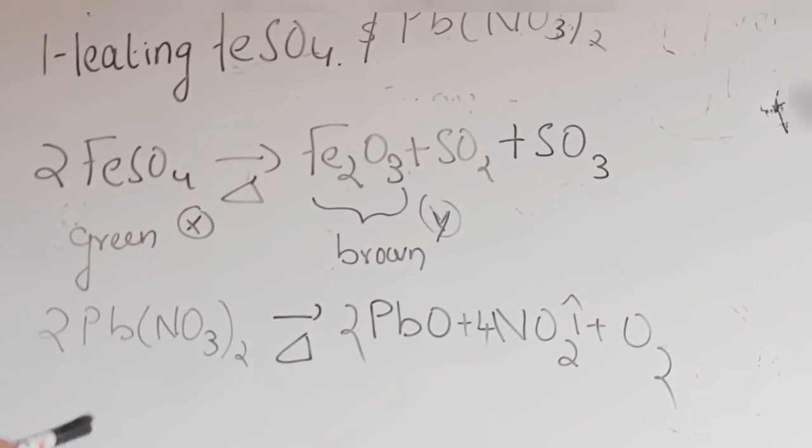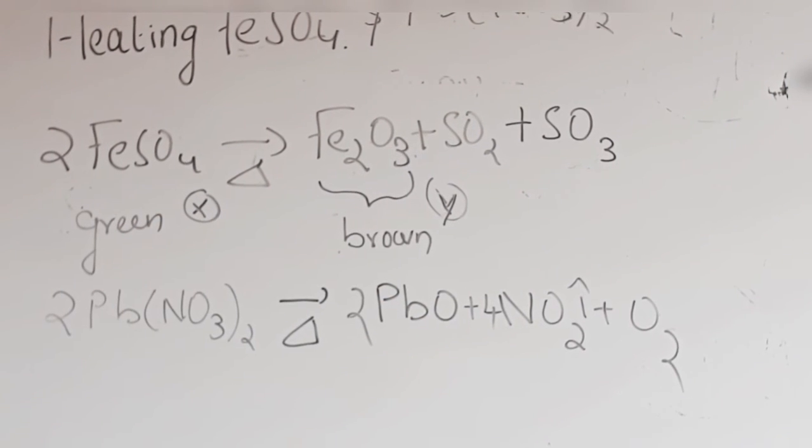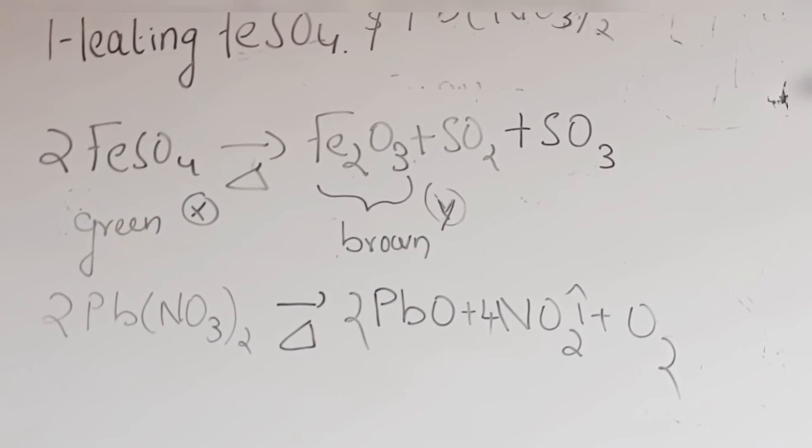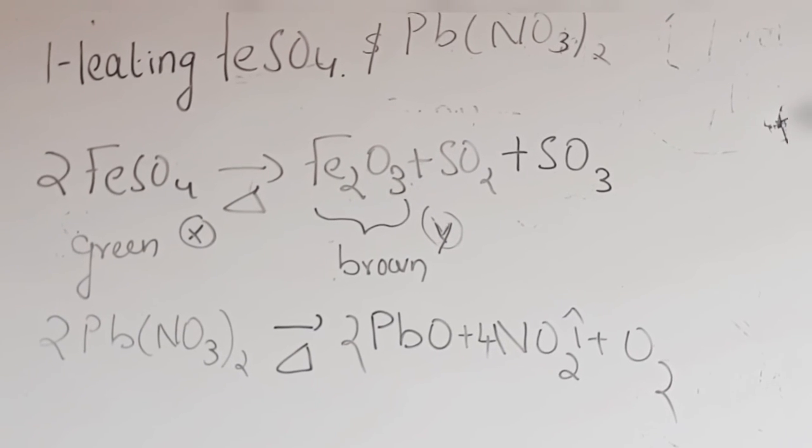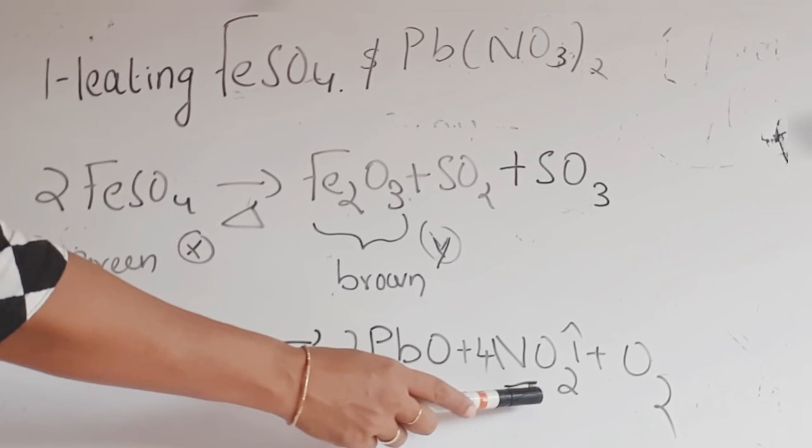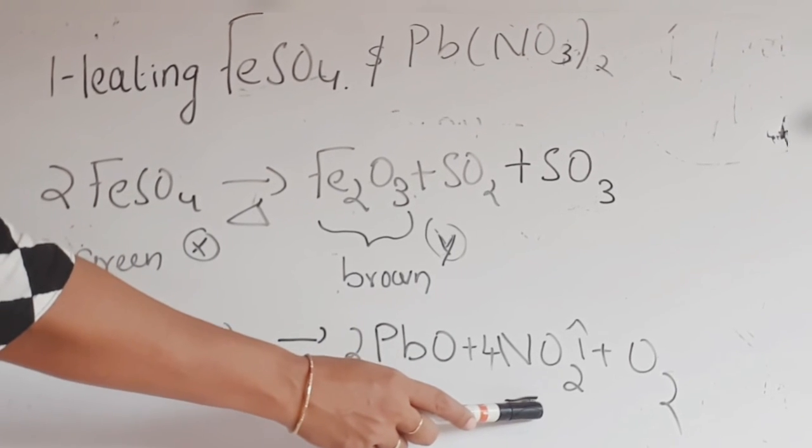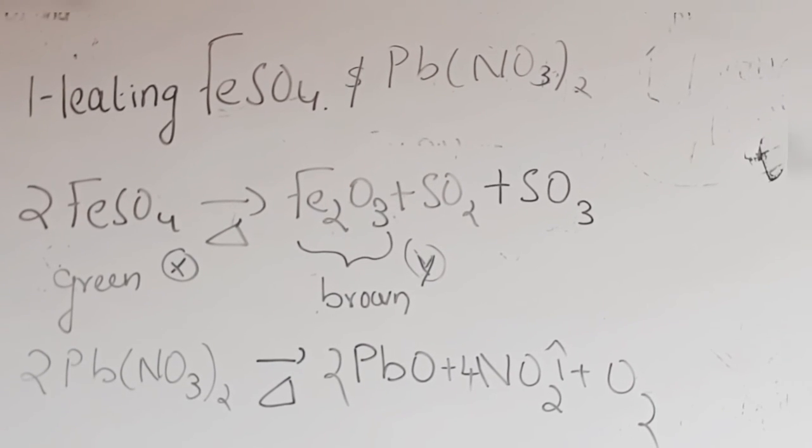When you heat lead nitrate crystals, you get brown color nitrogen dioxide gas. Here also the question comes like this: what happens when lead nitrate crystals get heated? What are the important observations? You can write the brown color NO2 will evolve in this particular reaction. This also comes under thermal decomposition reaction.